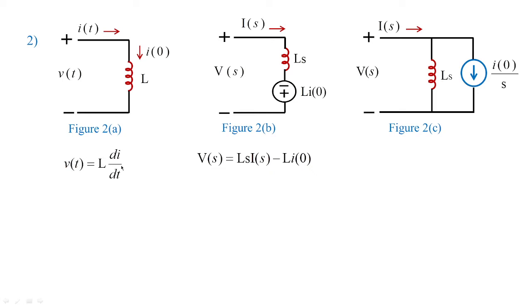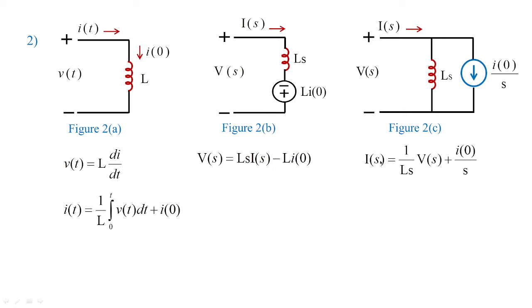From V(t) = L·di/dt, we can find the current by integrating both sides: I(t) = (1/L)·∫₀ᵀ V(t)dt + I(0), where I(0) is the stored energy. Representing this in frequency domain using Laplace transform gives I(s) = (1/Ls)·V(s) + I(0)/s. This is an important formula to remember for Laplace transform analysis.